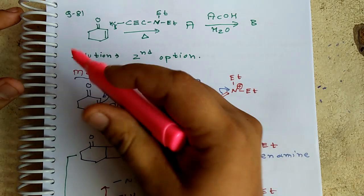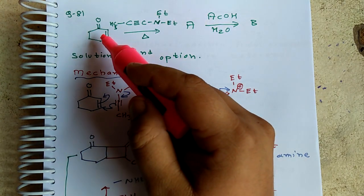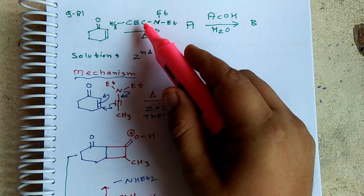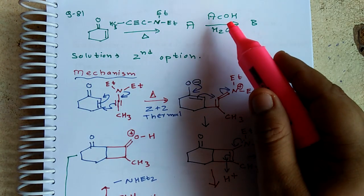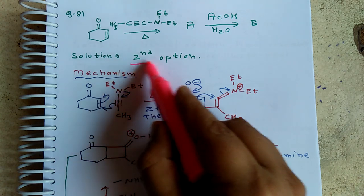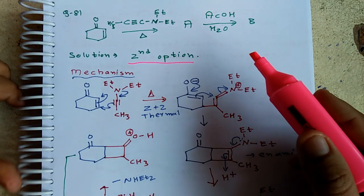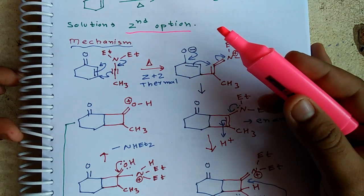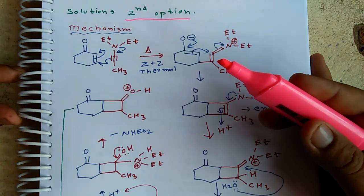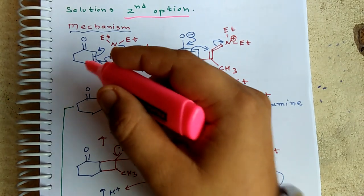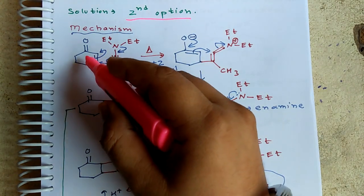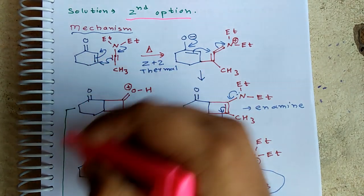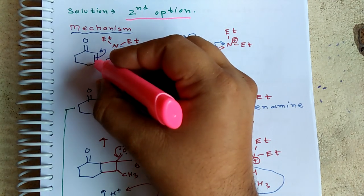This is the first question from Part C, from organic chemistry. They have given cyclohexenone, diethylpropyne, and acetic acid. The answer is the second option, but we will discuss how it is the second option. I have not drawn the options here but have drawn the mechanism. The role of cyclohexenone: in Michael addition reactions, this enone has a beta position that is electrophilic.